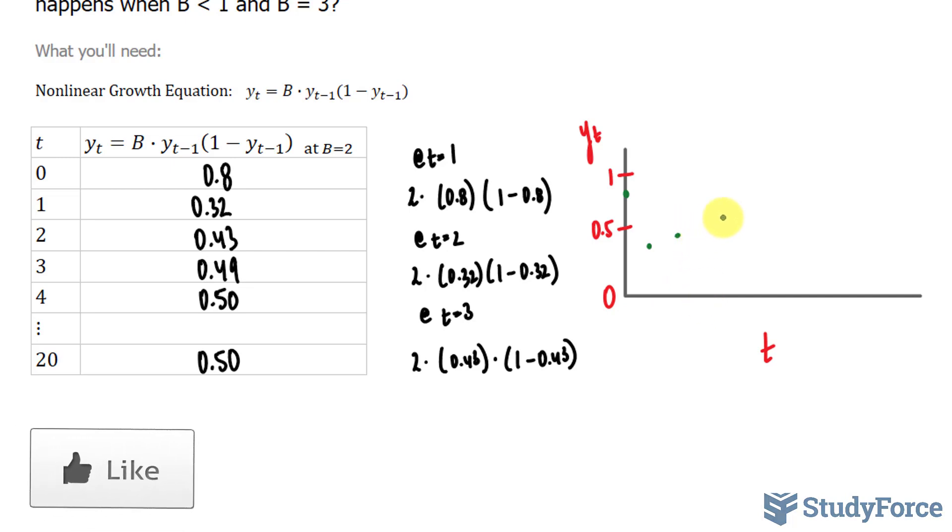At 4, we have 0.50. So it dips down using a smooth curve, dips down like this, and then it levels off at 0.50 for a long period of time.